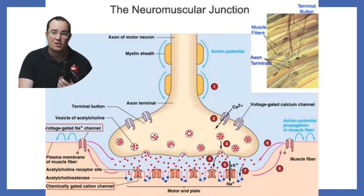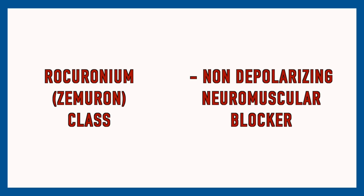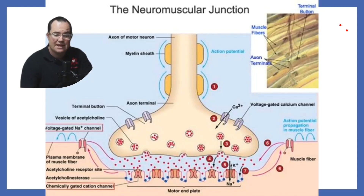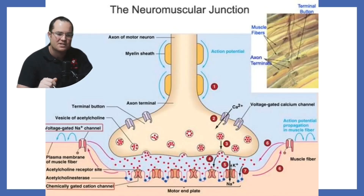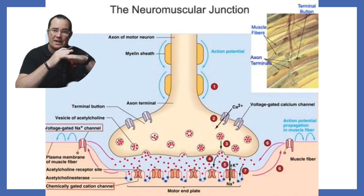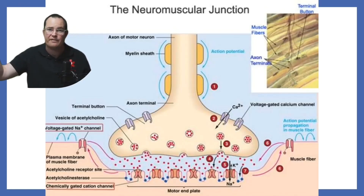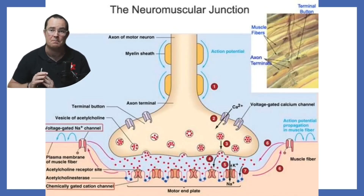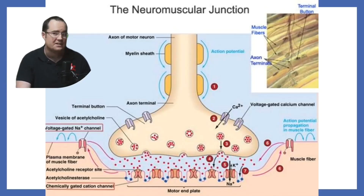Rocuronium is a non-depolarizing neuromuscular blocker. It comes down and fits into that same receptor site, but it blocks the receptor. When acetylcholine comes down, it just bounces off — it doesn't allow acetylcholine to sit in those receptor sites, thus making the patient paralyzed. Because rocuronium is non-depolarizing, your patient is completely flaccid and does not move at all. Vecuronium works the same way. Completely different from how succinylcholine works.